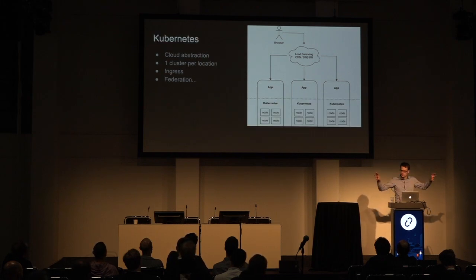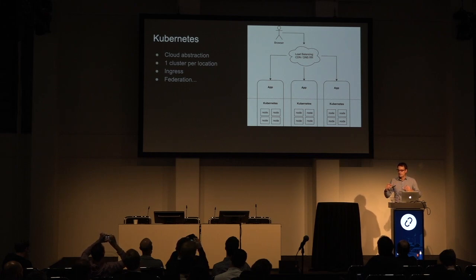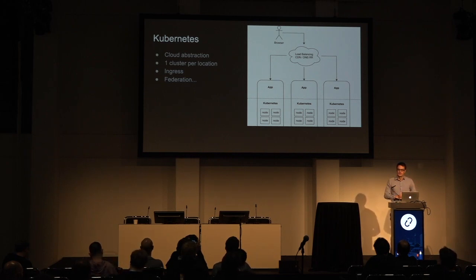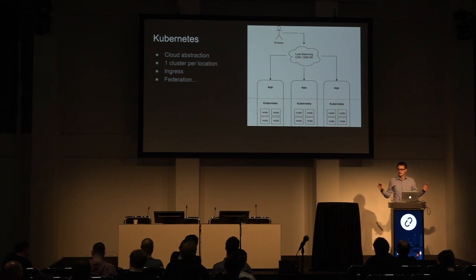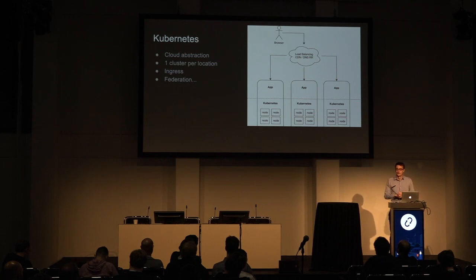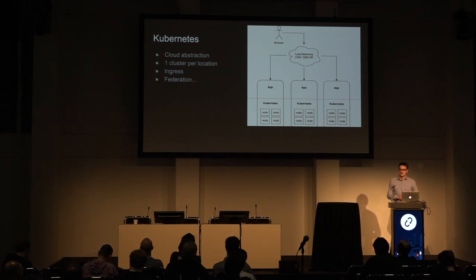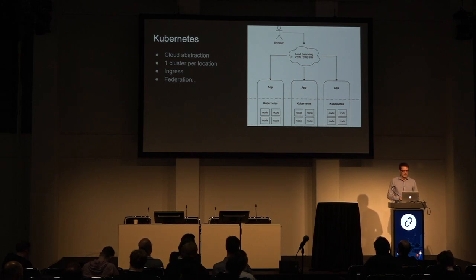Underneath the app we have Kubernetes, which acts as the cloud abstraction layer. It simplifies things and provides one API that abstracts the infrastructure, making it more developer-centric. What's really important here is to do one cluster per location and not one giant cluster stretched across different regions. We have resiliency goals, so we don't want to stretch our failure domain across the globe. The Kubernetes layer uses standard constructs — deployments, services, ingress — where ingress is how communication from outside happens.